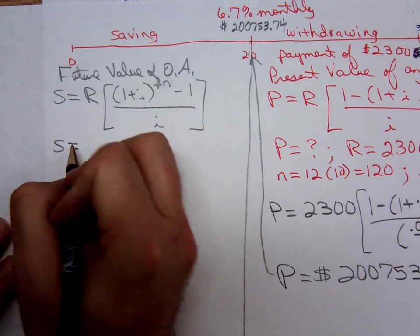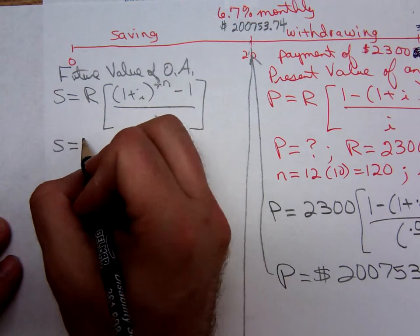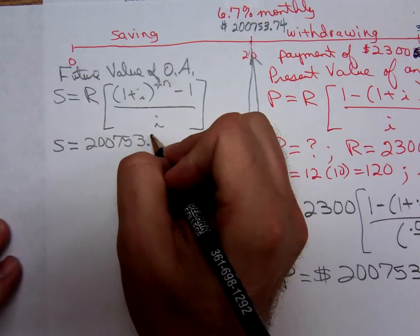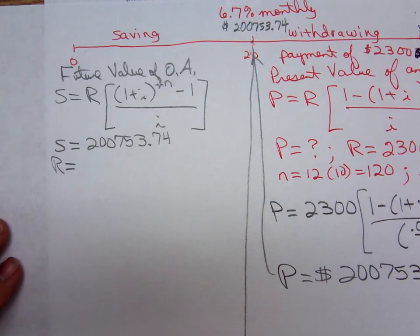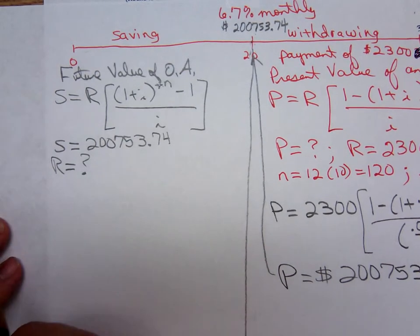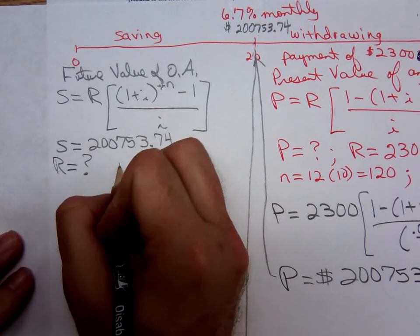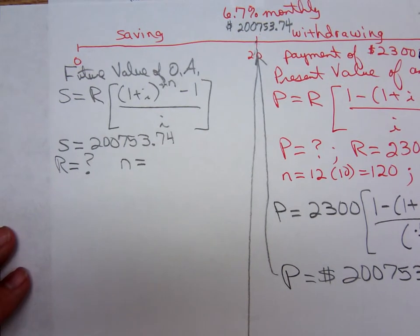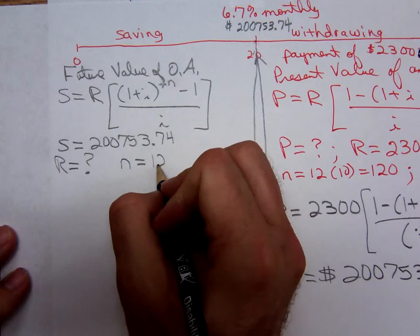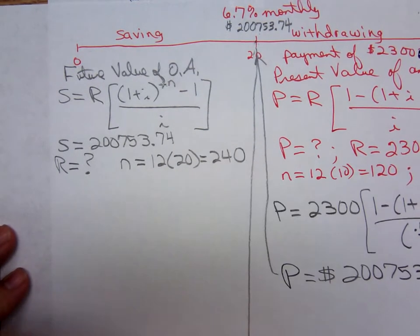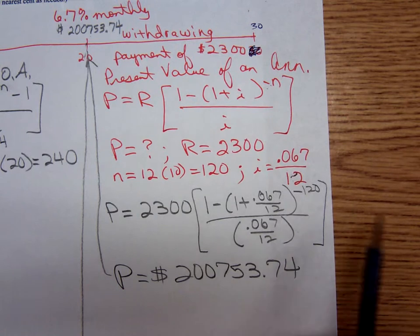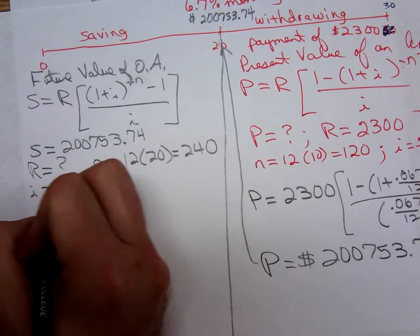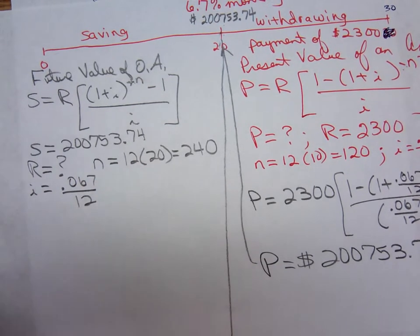S, we know how much she wants to have. She needs to have that $200,753.74. So we know the S value. The R value, how much does she need to deposit every month into the retirement account? That's what we don't know. The N value, she's going to make monthly deposits for 20 years. 12 times 20, she's going to make 240 deposits into that account. And finally, the i value, the interest rate is staying the same. It's still that .067 divided by 12.